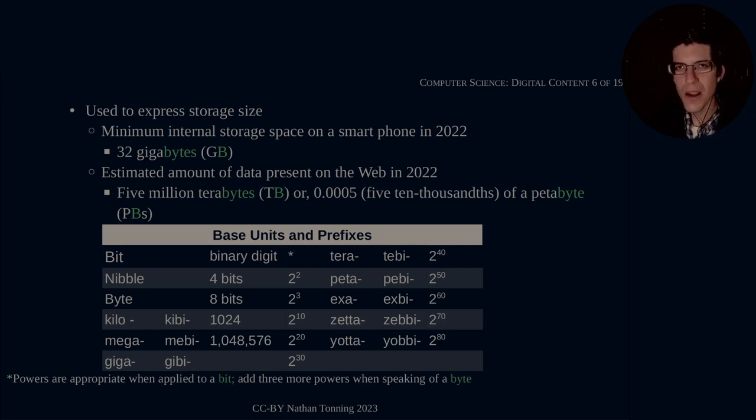Kilo, or kibby is two to the tenth power. Now, notice here that when we have powers are appropriate, when applied to a bit, you have to add three more powers when speaking of a byte. Even though it is more appropriate to think of this in terms of base two, and therefore using the kibby, mebby, gibby, tebby, pebby, expby, zebby, and yobby, it is still in use today to have the prefix on the left-hand side.